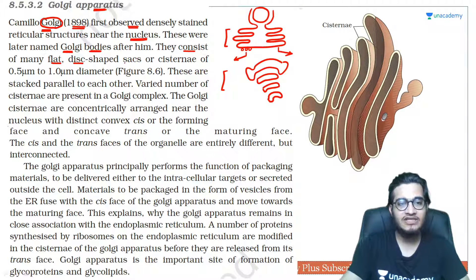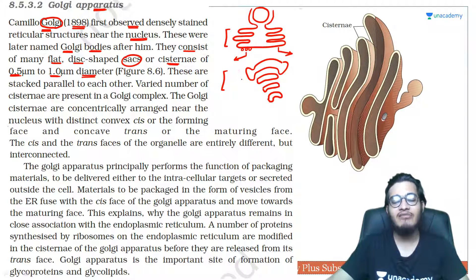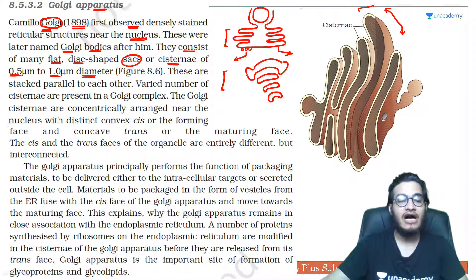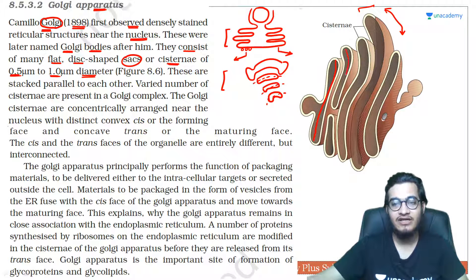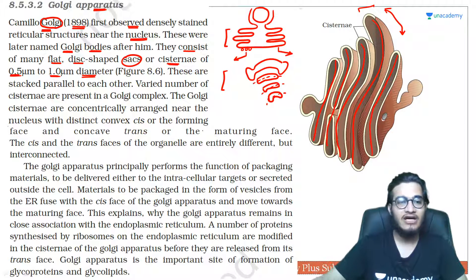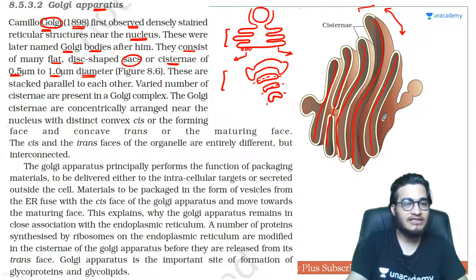They consist of many flat or disc-shaped sacs or cisternae of 0.5 micron to 1 micron diameter. Yani agar aap inका diameter dekhoge toh 0.5 micron se 1 micron tak ka diameter dekhne ko mil sakta hai. Yahan par tube-like structures ya flat disc-like structures present hain is tarike se. Yeh disc ek ke upar ek attached hoti hain parallel orientation mein — for example, this is a disc, then this is a disc, then this is a disc — toh yeh parallel ek ke baad ek Golgi complex ke andar attached hain. So, these are stacked parallel to each other.